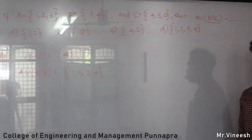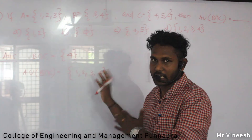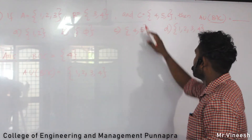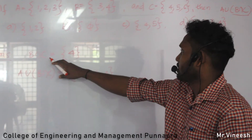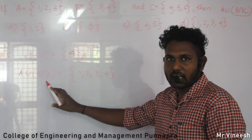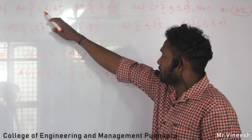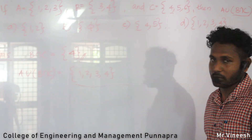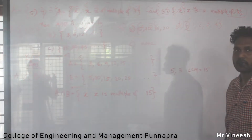We are interested in B∩C. B∩C — the common element of B intersecting C is 4. Then A∪(B∩C) = A∪{4} = {1, 2, 3, 4}. Wait — B∩C gives {4}, and A∪{4} gives the answer {1, 2, 3}. The answer is option {1, 2, 3}.